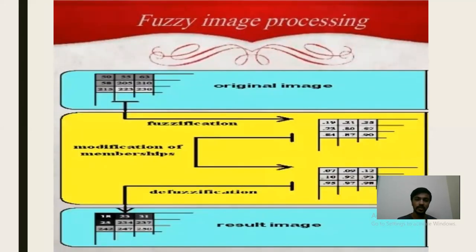This diagram shows the original image and the result image. In between these, there is a modification of memberships where the values are interchanged and placed in order.